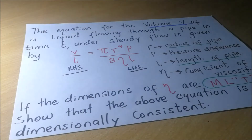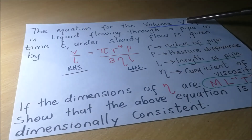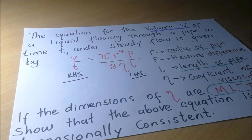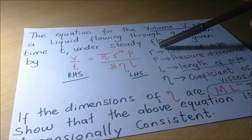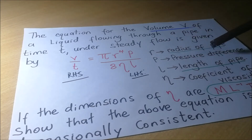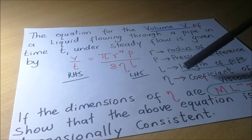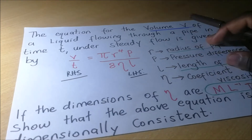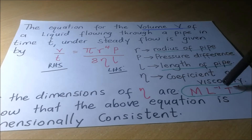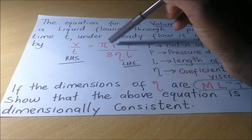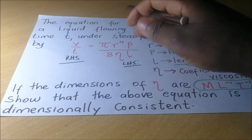In this question, we are being told the equation of the volume V of the liquid flowing through a pipe in time T under steady flow is given by this expression, where R is the radius of the pipe, P is the pressure difference, L is the length of the pipe, and this is the coefficient of viscosity. They've given us the dimensions for the coefficient of viscosity as this right there, and they're telling us to show that the above is dimensionally consistent.